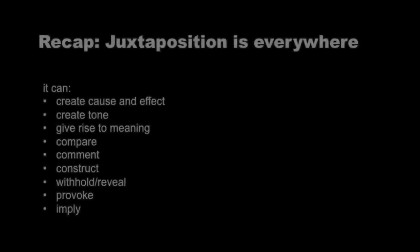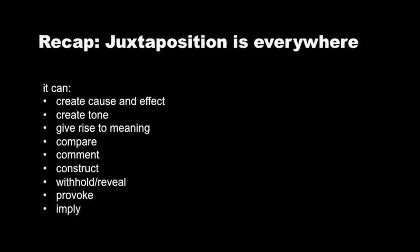We've looked now at juxtaposition as the core of the art of cinema in so many ways. Just to briefly recap: we've seen how juxtaposition can create cause and effect, can create tone, and gives rise to meaning by asking the viewer's mind to put two and two together rather than spelling everything out. A juxtaposition can be a comparison, it can be a comment, it can construct the whole of the cinematic space and action. You can use juxtaposition to withhold and reveal information, to provoke thought and feeling, and to imply associations. And a juxtaposition can be more than one of these things at one time.